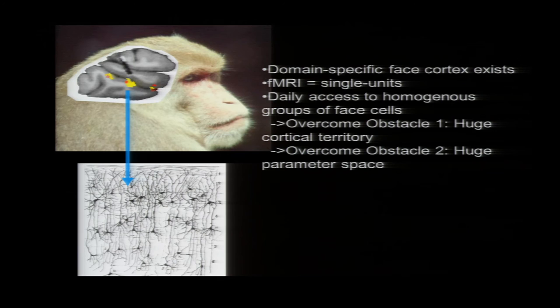So, at least two of the six face patches appeared to consist entirely of face-selective cells. This was very exciting for a number of reasons, but principally because I think it allowed us to overcome two of the biggest obstacles to understanding object recognition systematically, which are the huge cortical territory and the huge parameter space for representing any arbitrary object. So, now we can just focus on the face patches, and we can focus on this much more tractable space of faces.